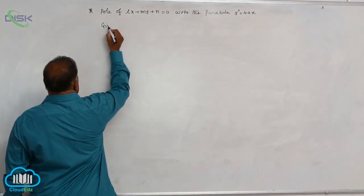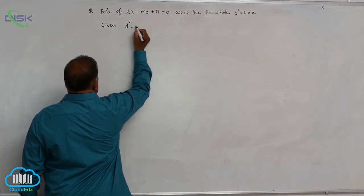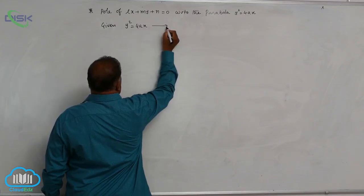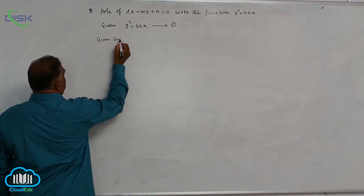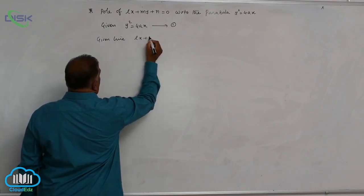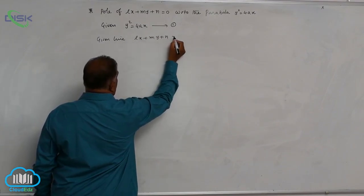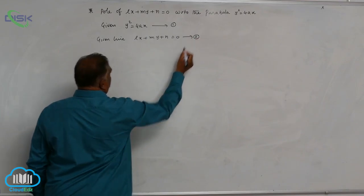Given parabola is y square equal to 4Ax, call it equation 1. Given line is Lx plus My plus N is equal to 0, call it equation 2.